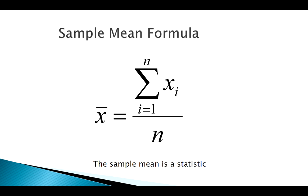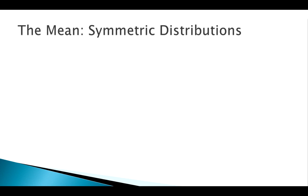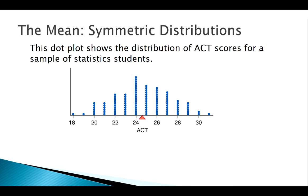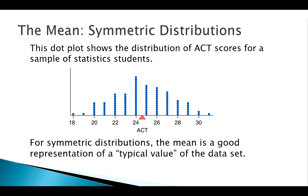Let's think about the mean of a symmetric distribution and how it describes central tendency. Here's a dot plot of ACT scores for a bunch of students, and the little triangle represents the mean of this distribution. Does that triangle represent the typical student? Yes — since this distribution is symmetric, the mean as the balancing point is a pretty good representation of the typical value.